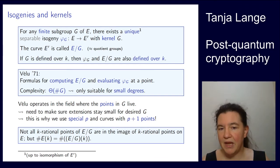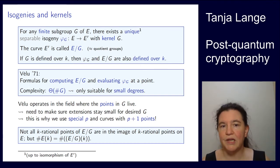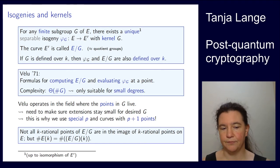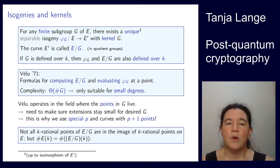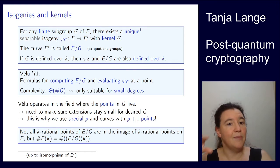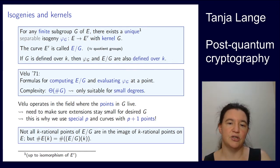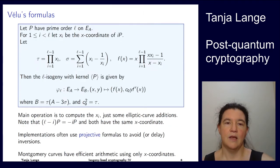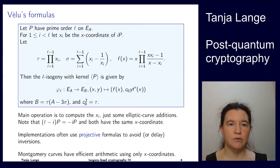There is an isogeny between them, you just might not be able to find it — it might have too large a degree to write down or be hard to find. The other points come from over there but the points live in extension fields.